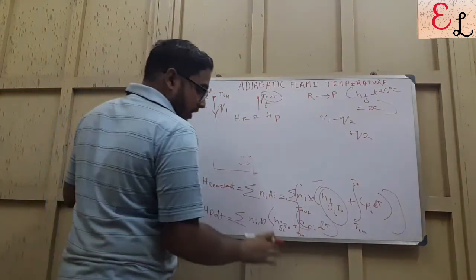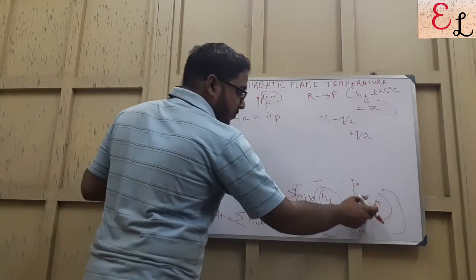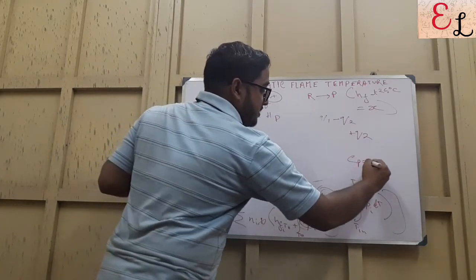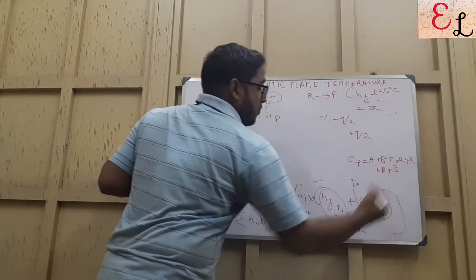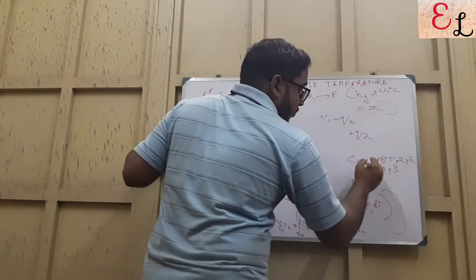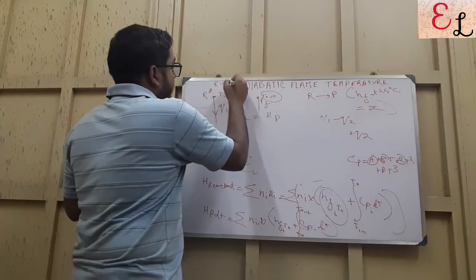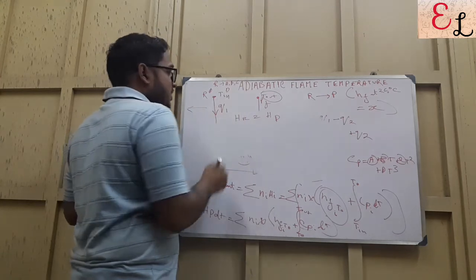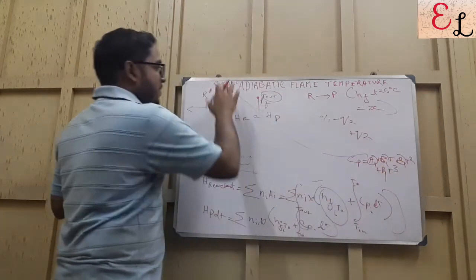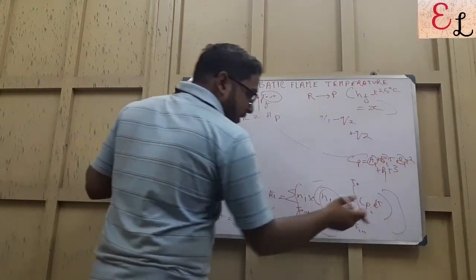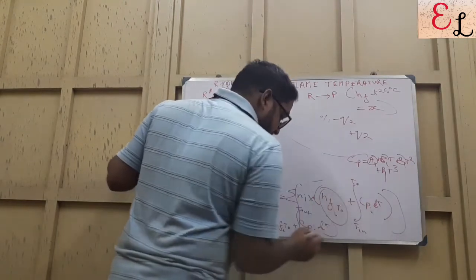We know the heat of formation at standard temperature. We bring them down to standard temperature. We know the Cp_i expression in terms of T. We know that Cp is A + BT + CT² + DT³. For individual components, A, B, C, D are going to change. For each reactant, there will be different A1, B1, C1, D1 coefficients, and that's why there will be an expression of Cp in terms of T, and then we will solve to get a final expression in terms of T_out.